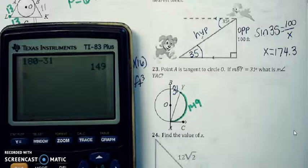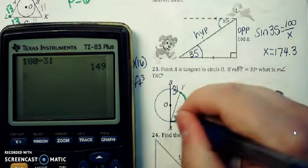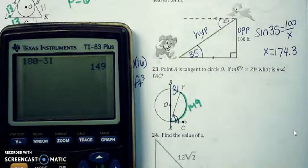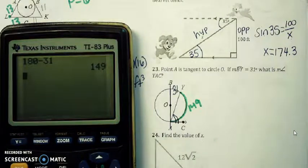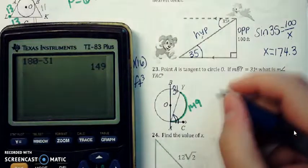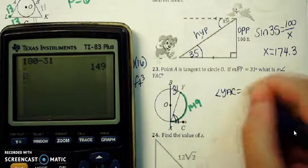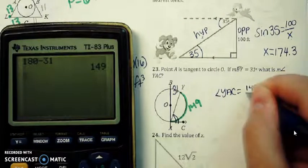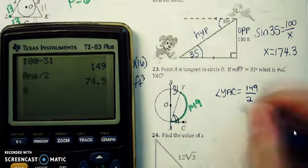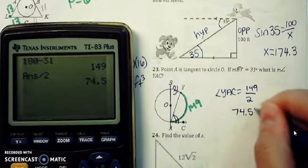180 minus 31 here, so 180 minus 31 is going to give us 149. Now the angle here that we want, this yac, is called an inscribed angle. Inscribed angle means the vertex is on the circle, so an inscribed angle is half the measure of the arc that it runs into. So angle yac here is going to be 149 divided by 2, which is going to give us 74.5 degrees.